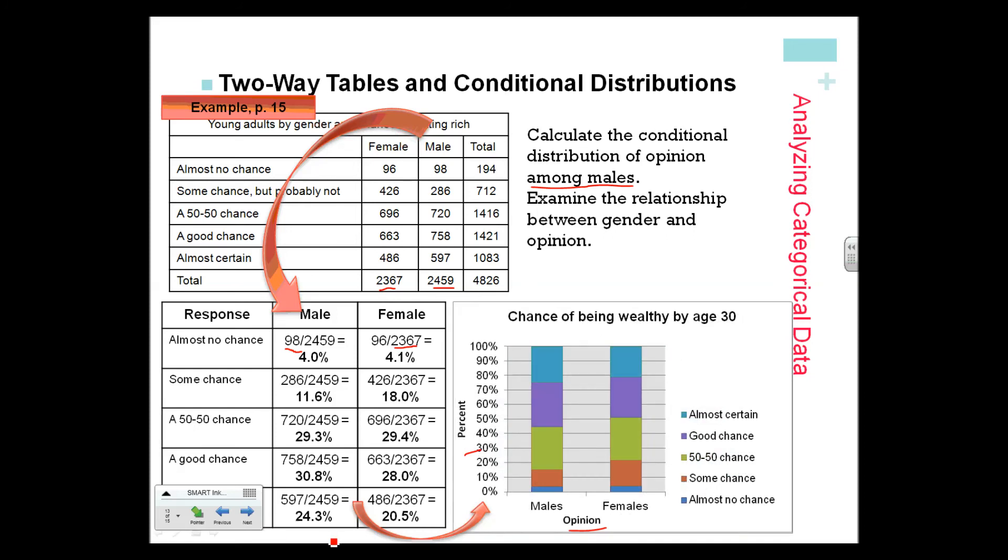The second way to do it is this segmented bar graph. Notice you're going to have one long ribbon under the males and one under the females. It always adds up to 100%, of course.